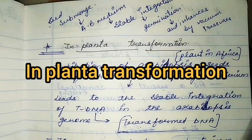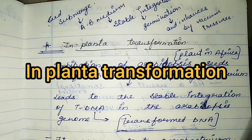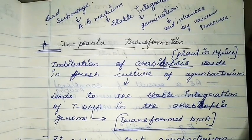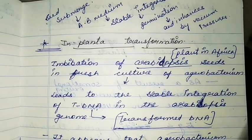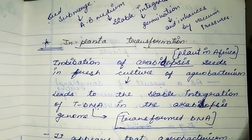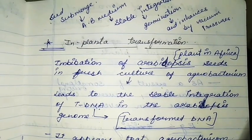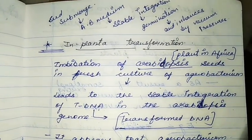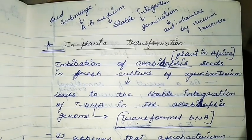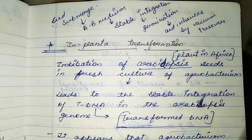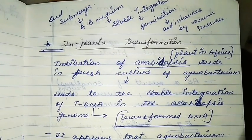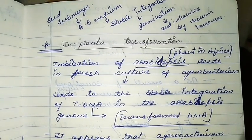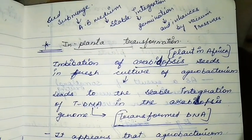Today's topic is In Planta Transformation. In Planta Transformation is an Agrobacterium-mediated gene transfer method. The first method we studied in the first video was co-culture with tissue explant. Now we will learn the second method, which is a very simple method.